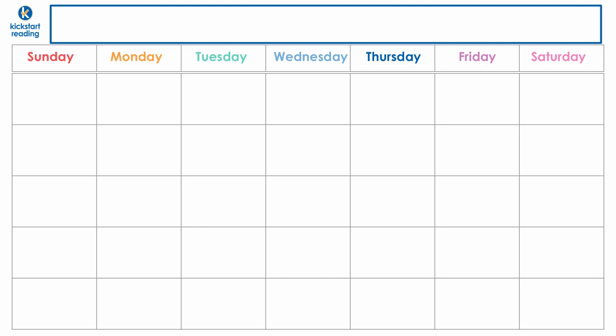The very first thing we're going to do is write the name of the month in the top blue box. Can you point to that top blue box? Right there. That box. That's where we're going to write the word November together.